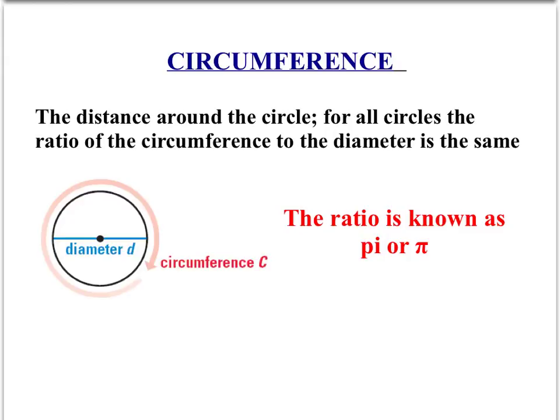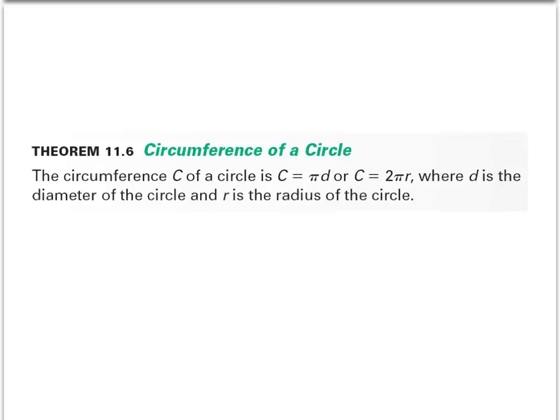The circumference of a circle is the distance around the circle. For all circles, the ratio of the circumference to the diameter is the same — that ratio is known as pi, expressed as 3.14 followed by many more digits. Theorem 11.6 gives the circumference formula as pi times d, or 2pi times r, where d is the diameter and r is the radius.